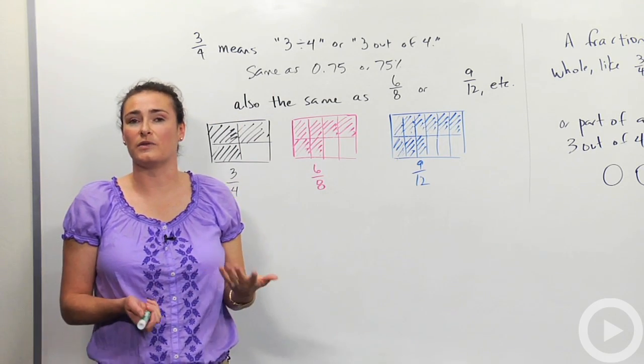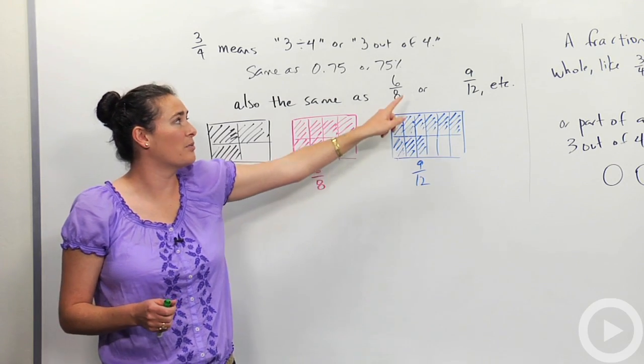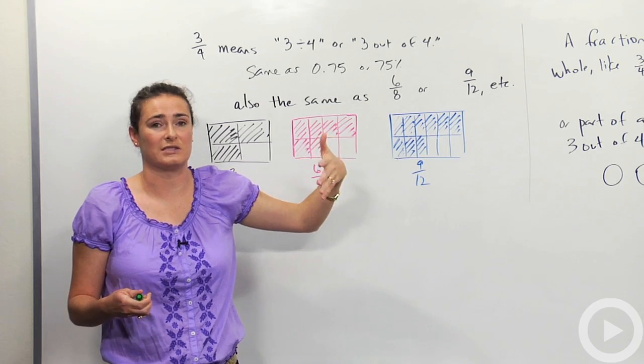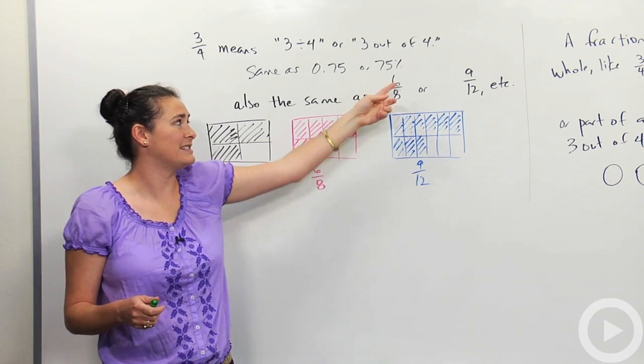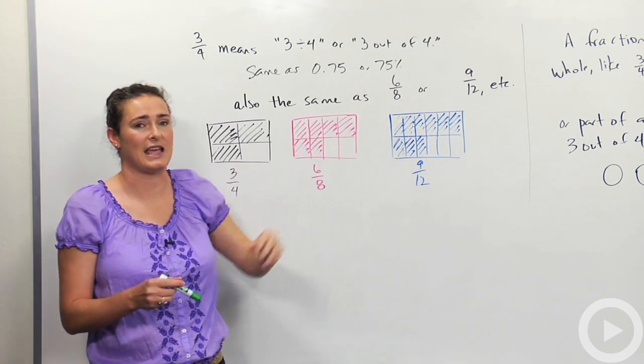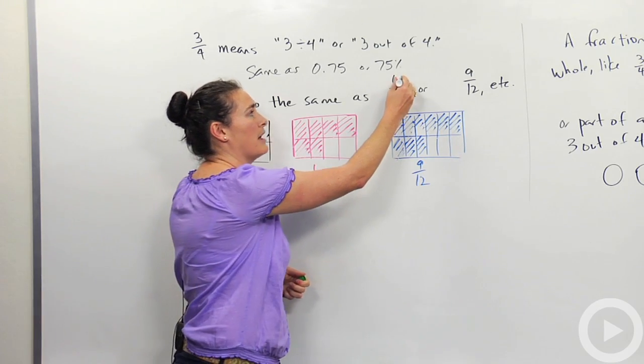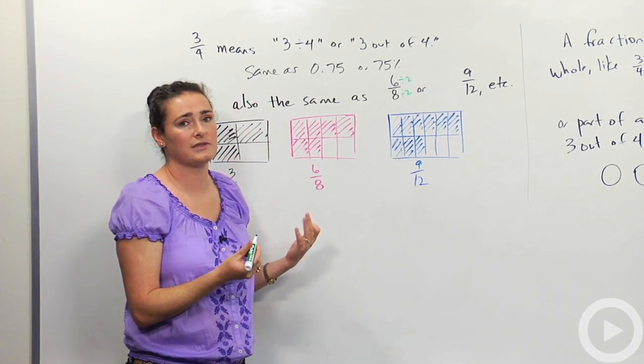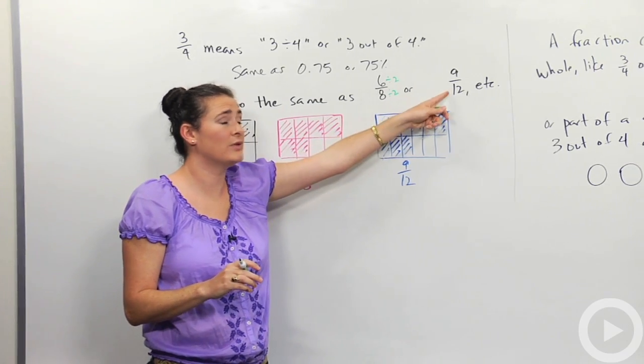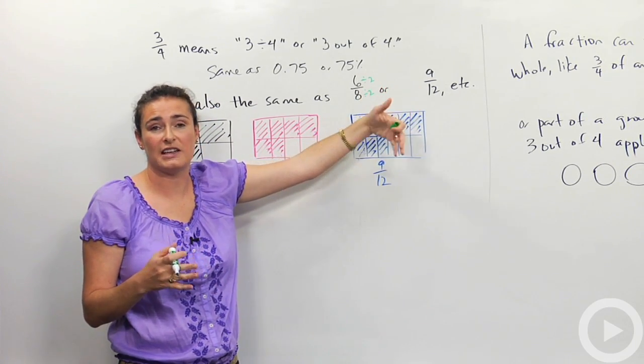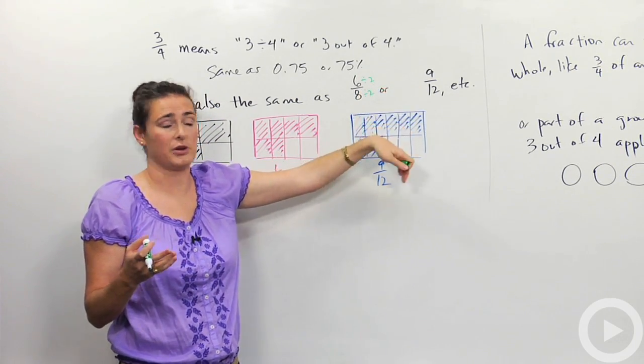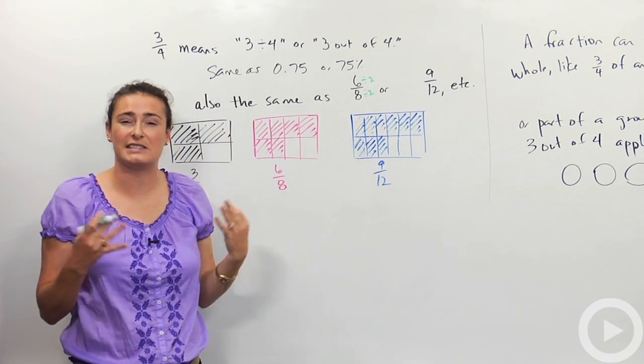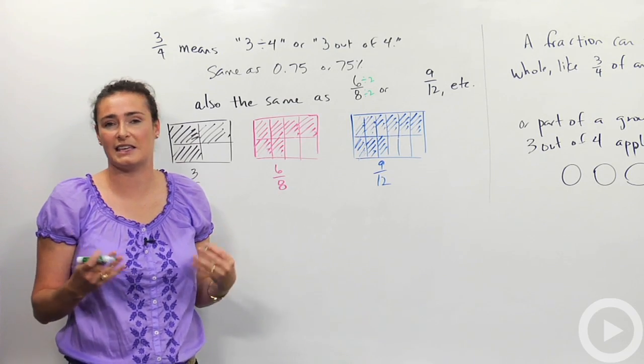And that's also how we reduce fractions. If I started with the number 6 eighths, I might notice that there's a greatest common factor that goes into both of those. 2 multiplies into 6, and 2 also multiplies into 8. So I could divide top and bottom both by 2, and that would get me back to 3 fourths. Same thing with 9 twelfths. The greatest common factor is 3. 3 goes into top, 3 goes into bottom. If I divide top and bottom by 3, again, I'll get back to 3 fourths. It's just the same number written in different ways. That's the key.